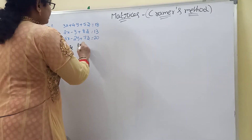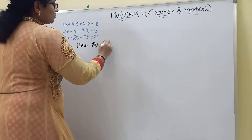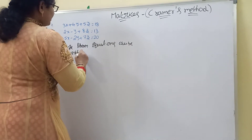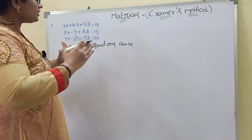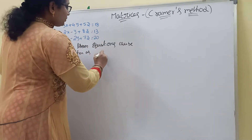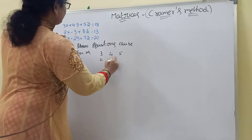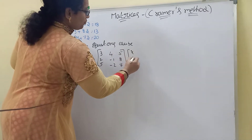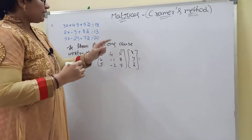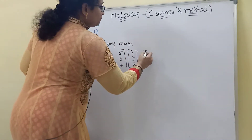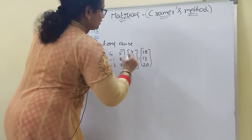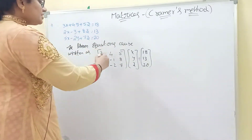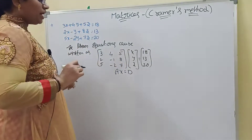The linear equations can be written in matrix form as A·X = B. The coefficient matrix A has entries 3, 4, 5 / 2, −1, 8 / 5, −2, 7. The constants matrix B is 18, 13, 20. So we write A times X equals B.